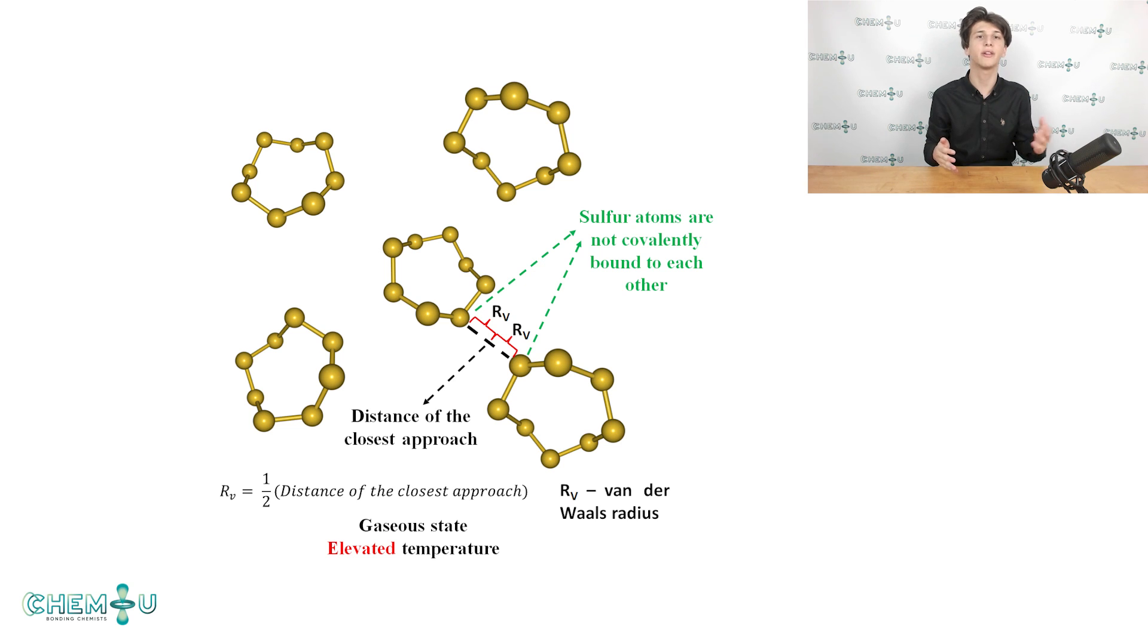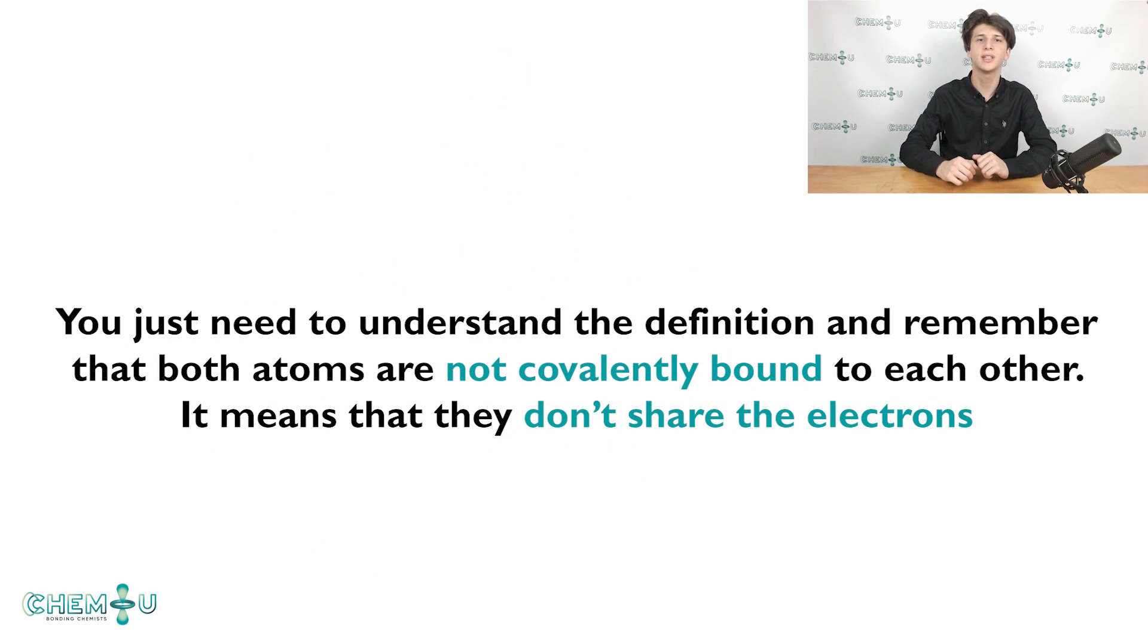There are various experimental and theoretical techniques to determine or measure the van der Waals radius of an atom, but we will not discuss them today. You just need to understand the definition and remember that both atoms are not covalently bound to each other. It means that they don't share electrons at all.